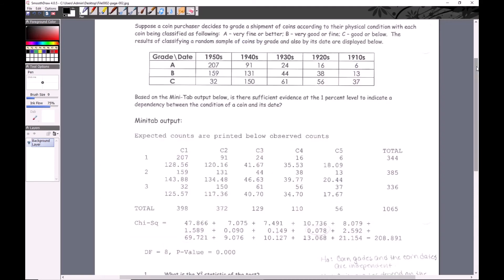This is the next one. We've got a coin purchaser who decides to grade a shipment of coins according to their physical condition, with each coin being classified as A (very fine or better), B (very good or fine), or C (good or below). They also broke them up by decade. We have some Minitab output. Is there sufficient evidence at a 1% level - that's alpha - to indicate a dependency between the condition of the coin and its date?